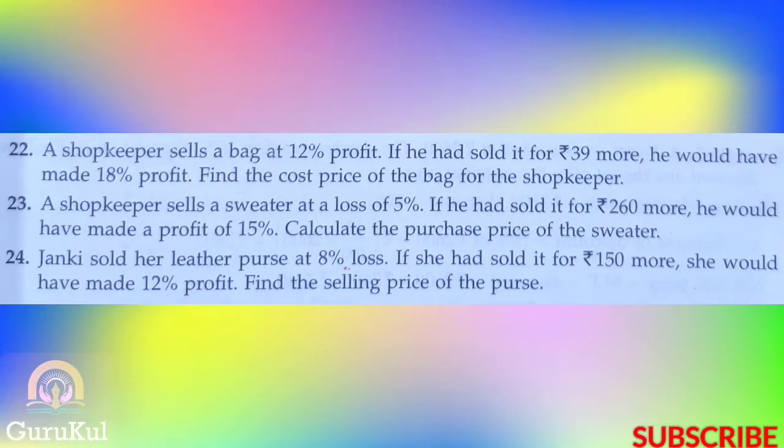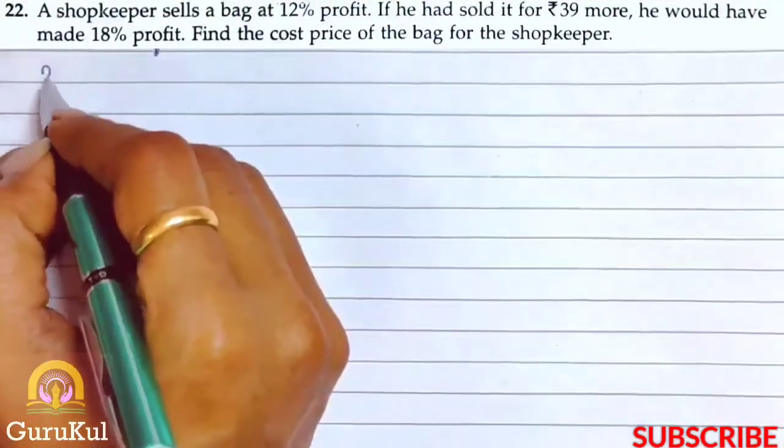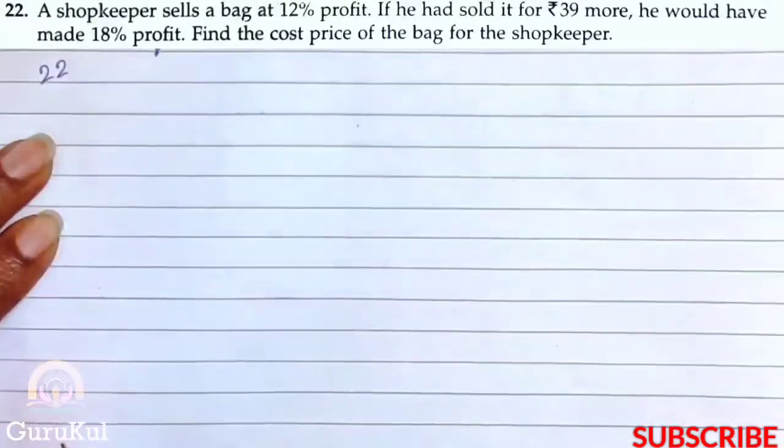Today I am going to start with part 8 of exercise 7.2. Question 22 says a shopkeeper sells a bag at 12% profit. If he had sold it for Rs. 39 more, he would have made 18% profit. We need to find the cost price of the bag.